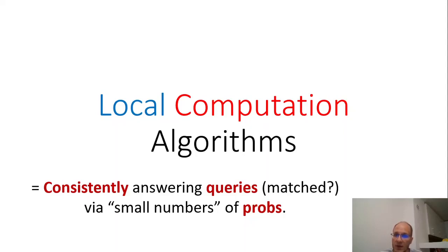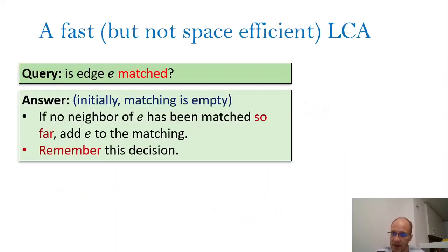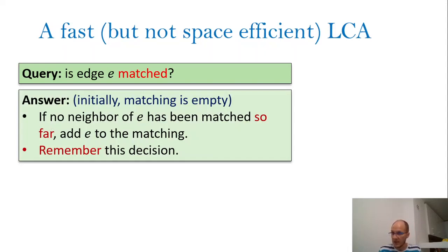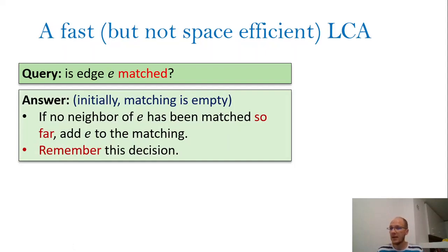Having this in mind, we can define a local computation algorithm as follows: it is a way of consistently answering queries — in our case, matched or not matched for an edge — via a small number of probes. Let us see how this definition applies to the following algorithm. The query is to answer whether edge E is matched or not. The algorithm maintains a list of edges forming a matching, initially empty. When it gets a query for edge E, it says: if there is no neighbor of E — no incident edge of E — in my matching list so far, then add E to the matching. Otherwise, report that E is not matched. This is essentially the greedy algorithm for maximal matching.